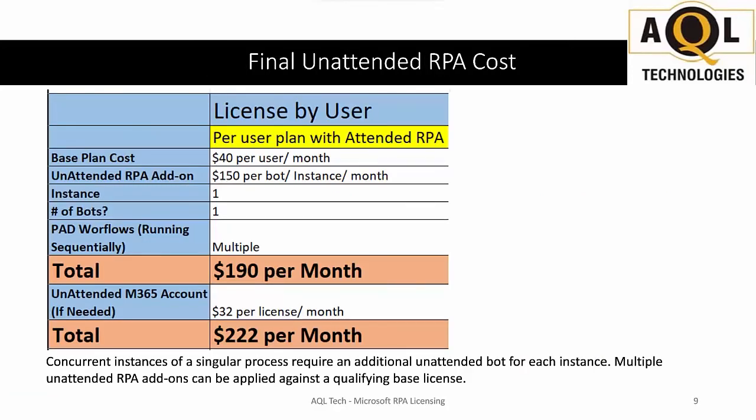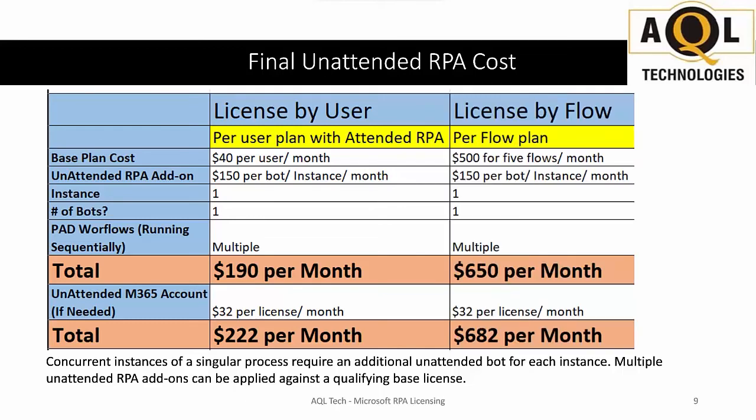Here is the most important slide for unattended licensing. For licensing per user — one bot running one or multiple desktop flows in sequential order — the cost is $190 per month without the unattended Microsoft 365 enterprise licensing, and $222 per user per month if you add that unattended Microsoft 365 licensing.